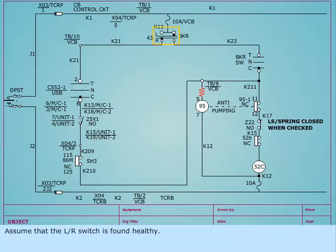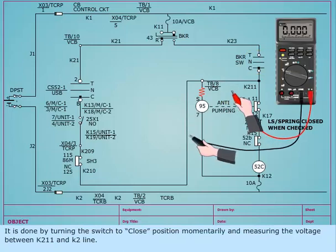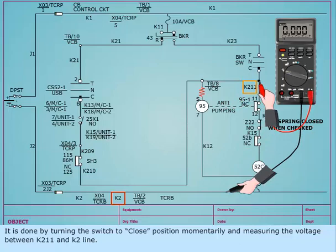Assume that the L/R switch is found healthy. Next, the TNC switch should be checked for healthiness. It is done by turning the switch to close position momentarily and measuring the voltage between K211 and K2 line.